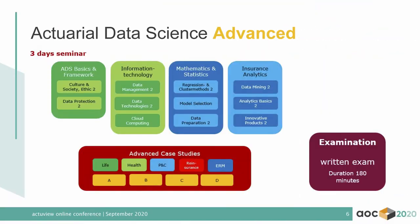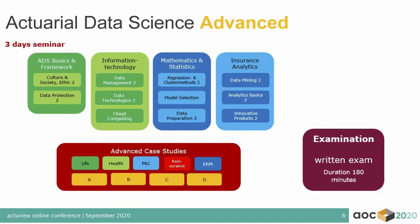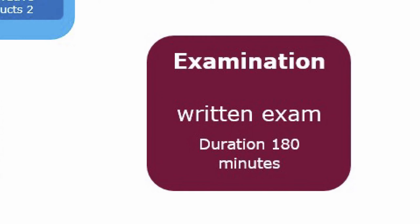In the next module, Actuarial Data Science Advanced, we deepen the topics and deal with further procedures in the context of machine learning. We then apply them to use cases, especially in the insurance industry, in the context of life, health, reinsurance, or risk management. Both modules, ADS Basic and ADS Advanced, are each concluded with a written examination of three hours. So you have to pass a written examination for both of them to get the title of Certified Actuarial Data Scientist, or if you're a prospective actuary, for your special seminars.